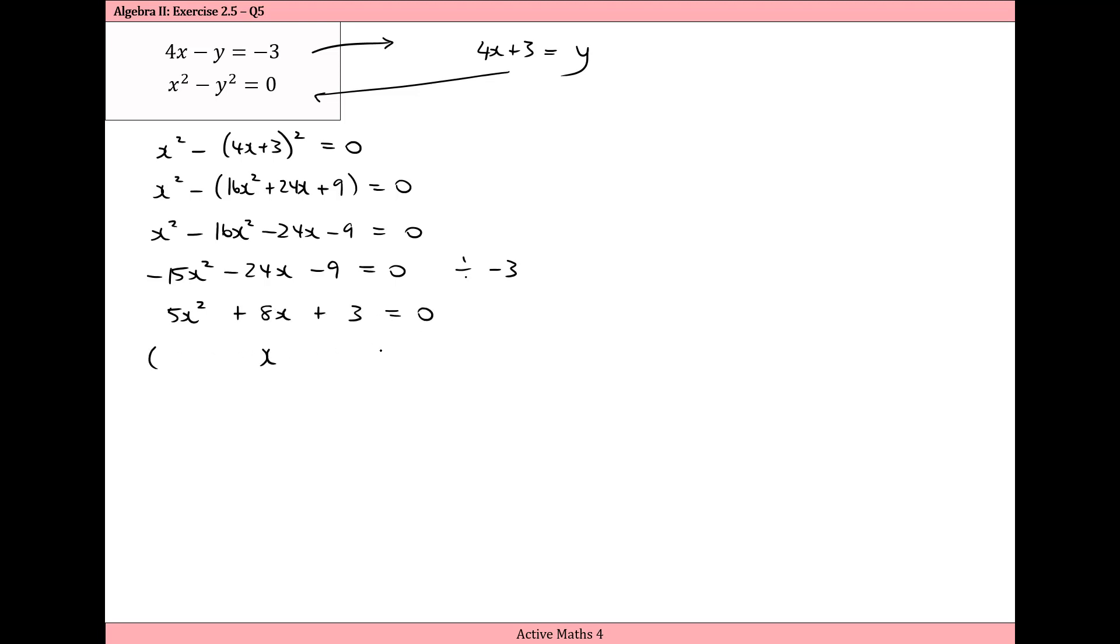So I should be able to factorize this. If I can't, I can always use the minus b formula. So we have 5x and x, 3 and 1. And then the inner 2 is 3x and the outer 2 give us 5x and plus 3x plus 5x is plus 8x. I'm going to let each bracket equal 0. So 5x plus 3 equals 0 and x plus 1 equals 0.